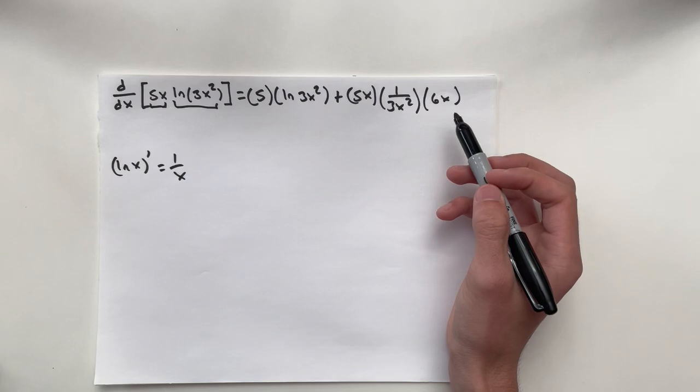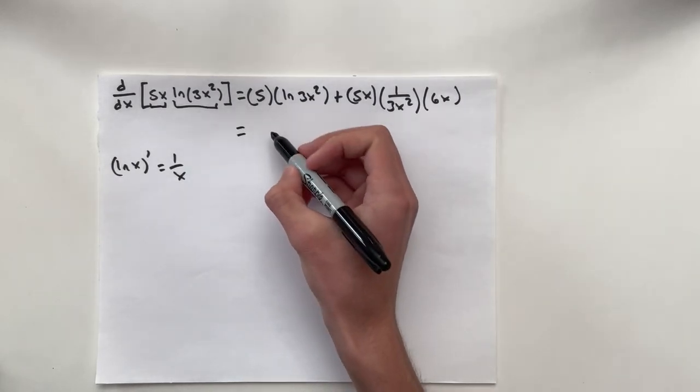Now we have all of our product rule stuff done. We can clean it up a bit and simplify.